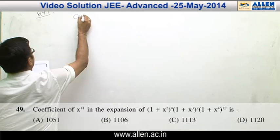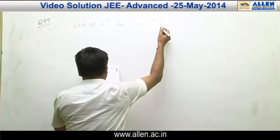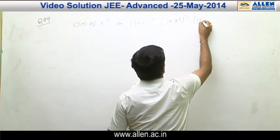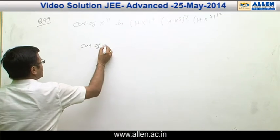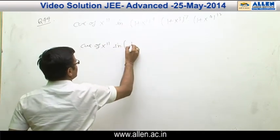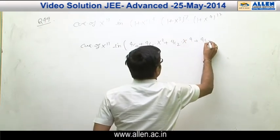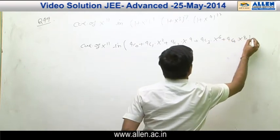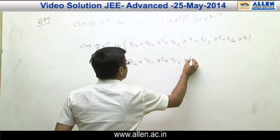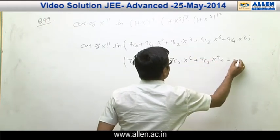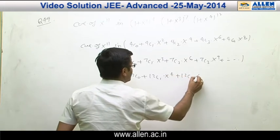Question 49. We have to find the coefficient of x¹¹ in the expansion of (1+x²)⁴ · (1+x³)⁷ · (1+x⁴)¹². We shall write some terms of the expansion using the binomial theorem: (4C0 + 4C1·x² + 4C2·x⁴ + 4C3·x⁶ + 4C4·x⁸) · (7C0 + ... + 7C3·x⁹ + ...) · (12C0 + 12C1·x⁴ + 12C2·x⁸ + ...).